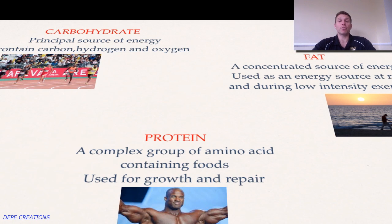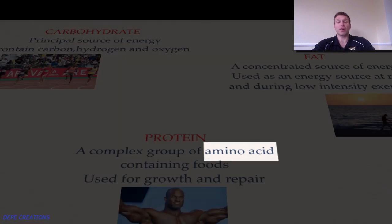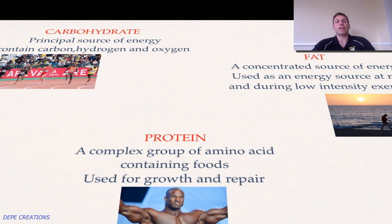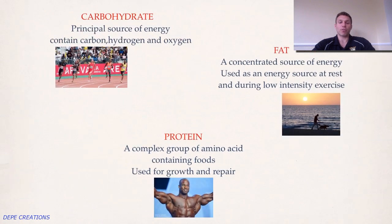Protein is found in foods like eggs and chicken breast, though the amount of protein derived from different foodstuffs does vary. The amino acids contained in proteins are the building blocks that make up protein, and they enable muscle to grow and repair. So if you are an individual developing their muscle mass, you need a protein-rich diet in order to maximise the potential of growth and repair.